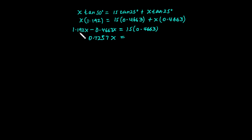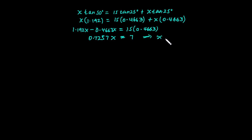Rearranging: x times tan 50° minus x times tan 25° equals 15 times tan 25°. So 0.7257x equals approximately 7. Therefore x equals 7 divided by 0.7257, which is approximately 9.6257 meters.